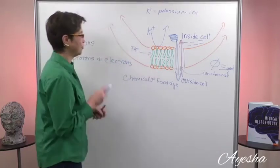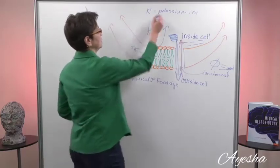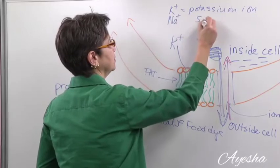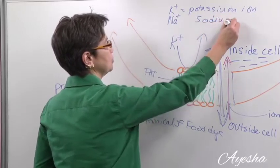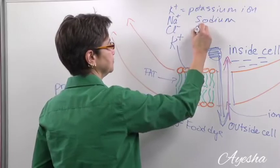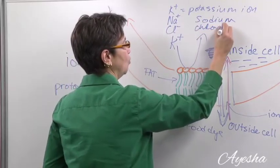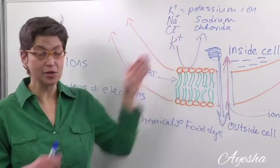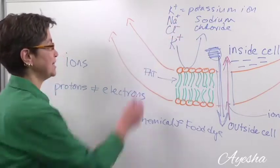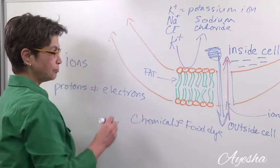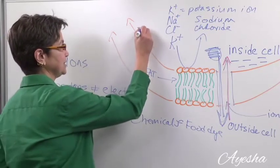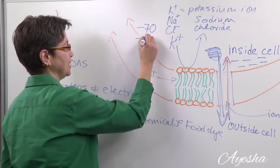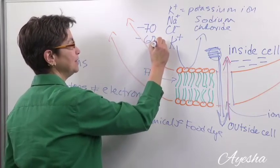And we have to worry about three ions, the potassium ion, the sodium ion, which is also positively charged, and chloride ion. And once we take into consideration each of these ions, what we see is that this cell is going to sit at rest at about negative 70 to negative 60 millivolts.